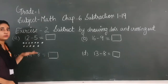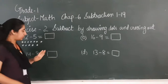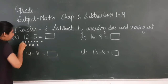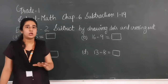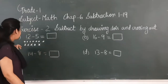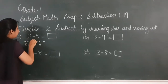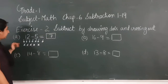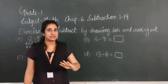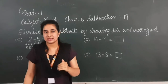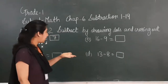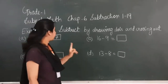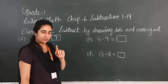Among these 12 dots, I have to subtract 5. So I will cross out 5 dots: 1, 2, 3, 4, 5. So after crossing out 5 dots, how many dots are remaining? 1, 2, 3, 4, 5, 6, 7. That means I am having 12 pencils — among those 12 pencils, I give 5 to my friend. So how many are left with me? 7. After giving 5 to my friend, 7 are left with me.